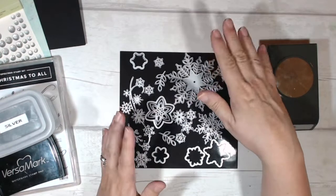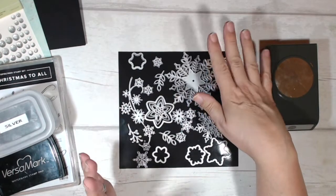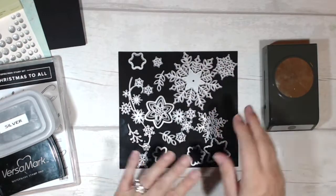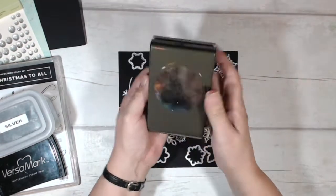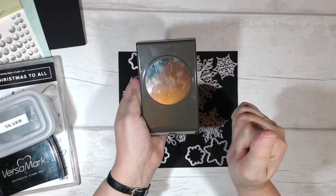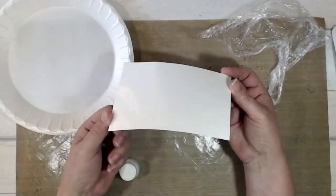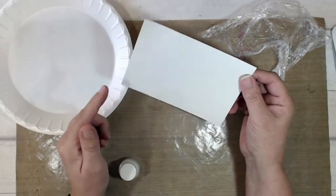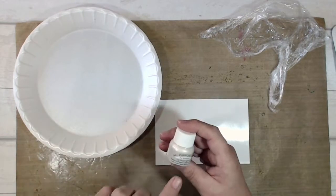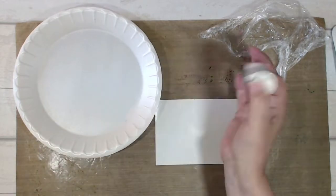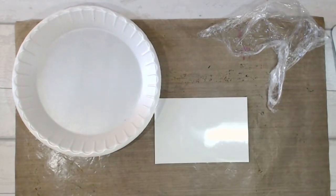I'm going to be using some of the snowfall thinlets. Again, these are only available in November 2018, so if you want them you know what to do—don't hang around. I've got a two and a quarter inch circle punch. This is the glossy white cardstock, and this piece is about six by four.